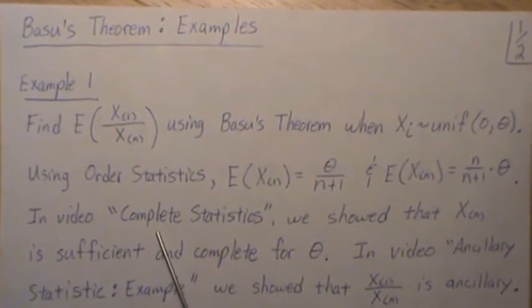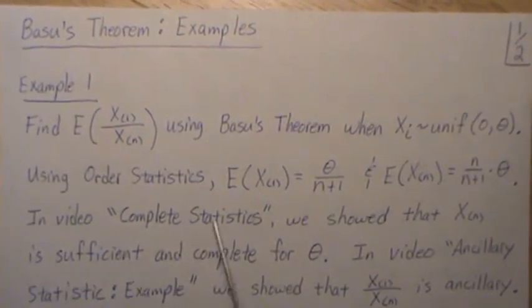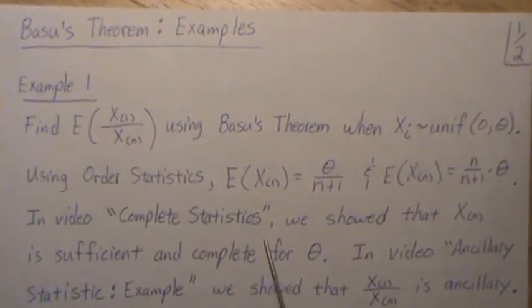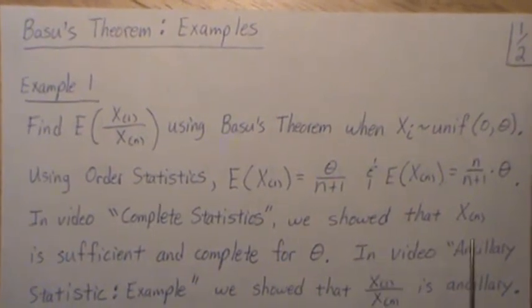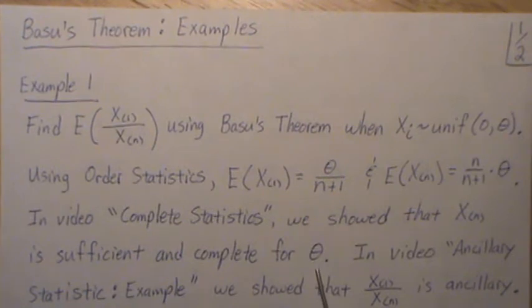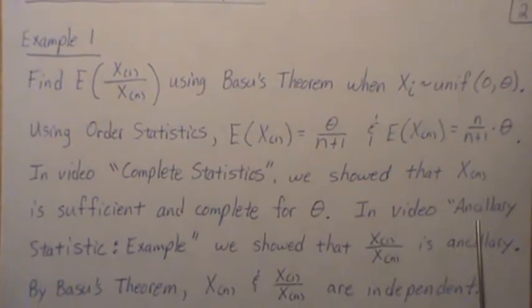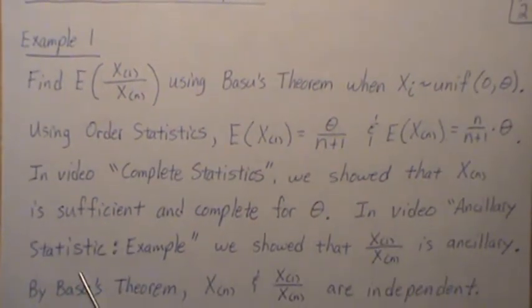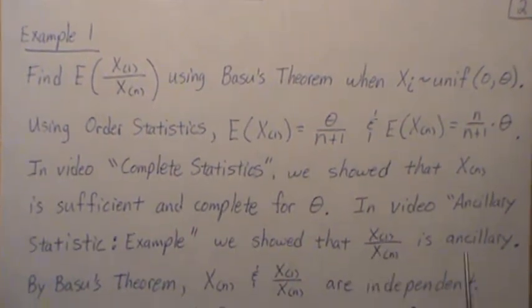Now in a video called complete statistics we showed that Xn is sufficient and complete for theta. In a video that I call ancillary statistic examples we showed that this ratio is ancillary.